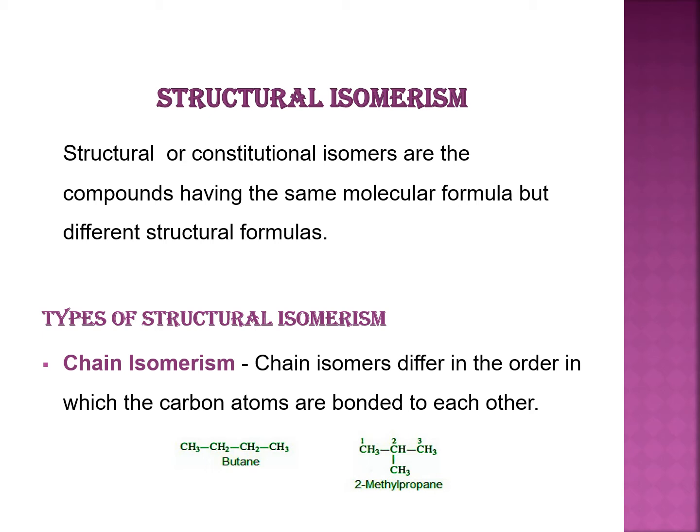Types of structural isomerism. First, chain isomerism. Chain isomers differ in the order in which carbon atoms are bonded to each other. This is the example of the butane molecule. Butane exists in two isomeric forms: n-butane and isobutane.